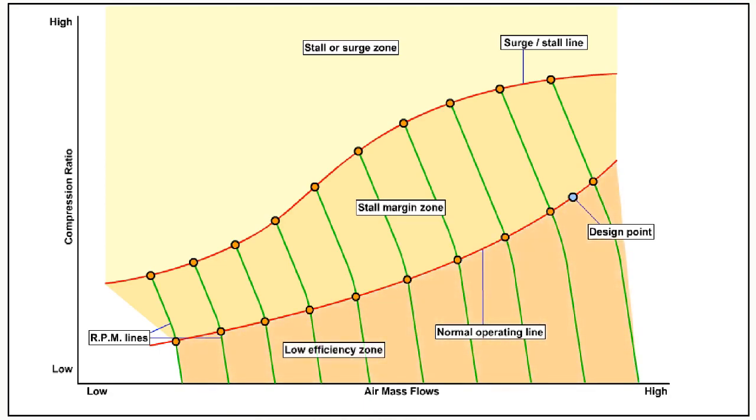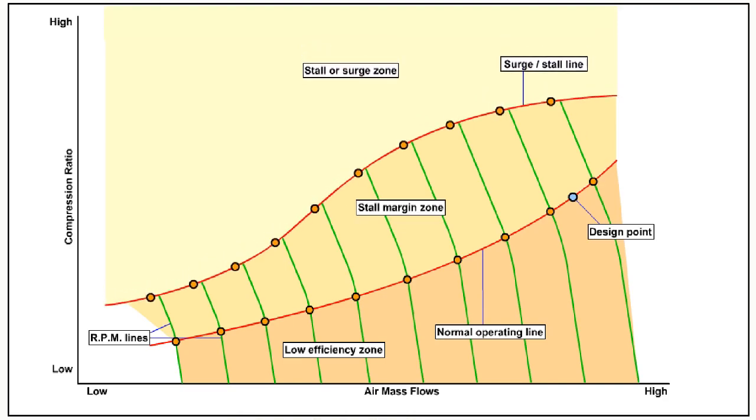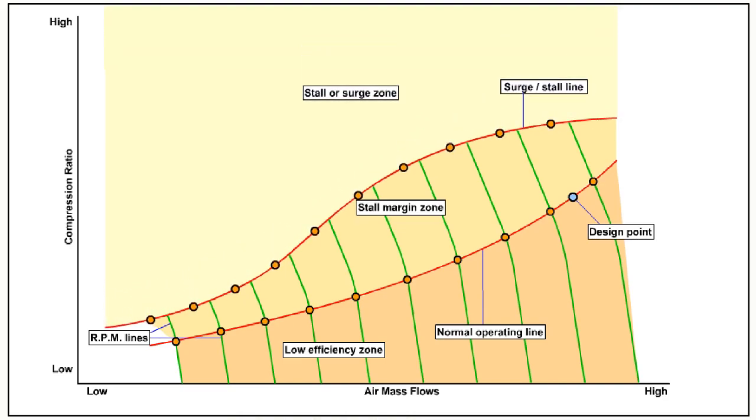An engine operating at compression ratios, mass air flows and RPMs that fall below the normal operating line will be operating below its normal efficiency. For instance, throughout its service life the compressor efficiency will, for various reasons, including minor blade deterioration and contamination, become lower and lower.